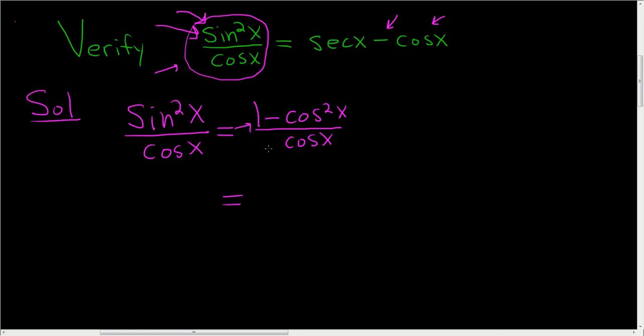So this is 1 over cosine, so 1 over cosine minus cosine squared over cosine. So cosine squared x over cosine x.